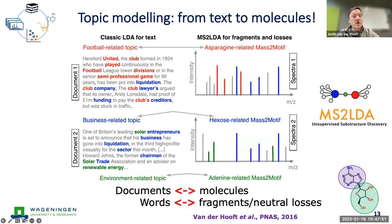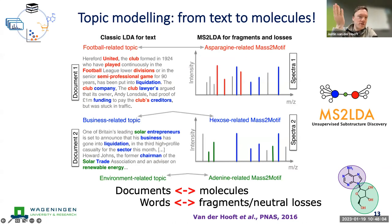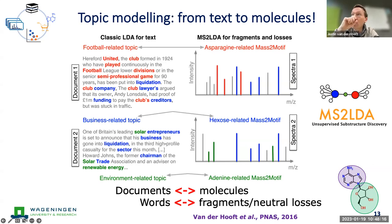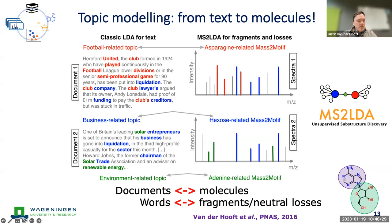MS2LDA — where MS2 refers to MS/MS data and LDA to the latent Dirichlet allocation topic modeling algorithm — was coined by Justin and he acknowledges it's not easy to pronounce. The approach works as follows: in normal topic modeling for text, you import all the words from a set of documents, remove redundant words, and let the algorithm find words that often co-occur across documents. In the metabolomics world, spectra become the documents, and peaks and neutral losses become the words. The question is: can the algorithm find co-occurring peaks and losses related to a topic — or in our case, a substructure?